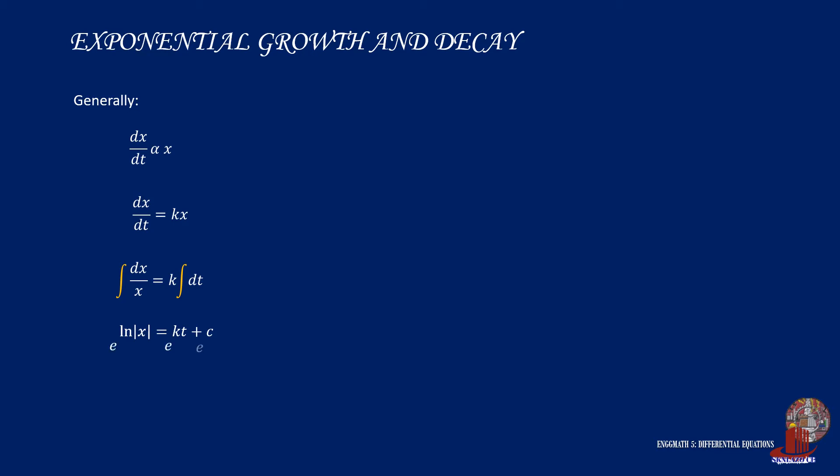In order to remove the natural logarithm, exponentialize the whole equation and take note that e raised to c is basically c. Then with exponential rules, we get x is equal to c times e raised to k times t.